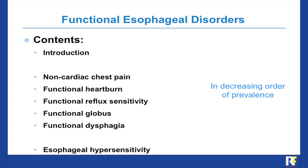The contents of the functional esophageal disorders chapter is an introduction and then five diagnostic categories, listed in decreasing order of prevalence. Non-cardiac chest pain is probably the most prevalent condition here and functional dysphagia the least prevalent one. Functional heartburn, reflux hypersensitivity — which is a new entity — functional globus, and then functional dysphagia.